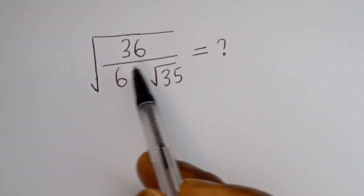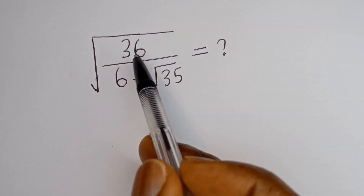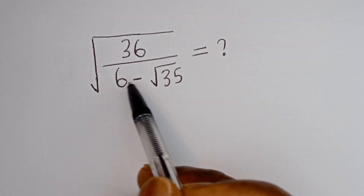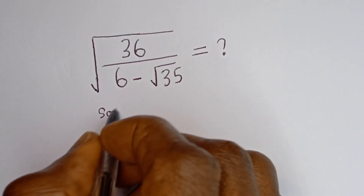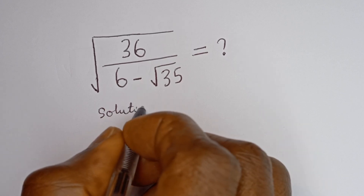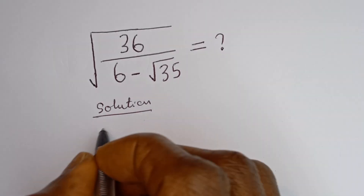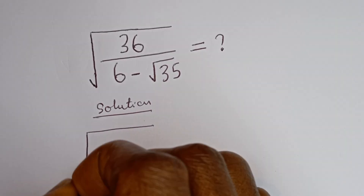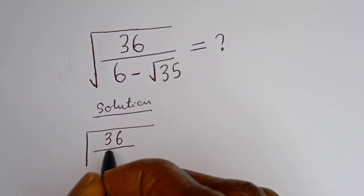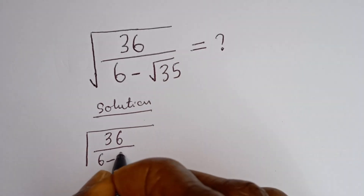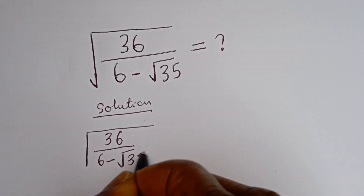Hello, how to simplify this nice math problem without using a calculator. We have square root of 36 divided by 6 minus square root of 35.